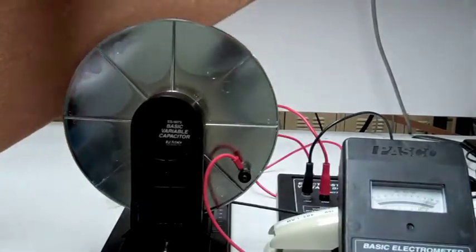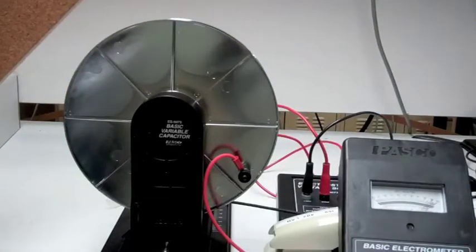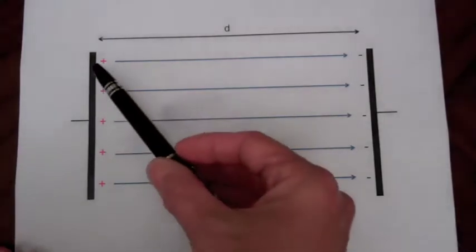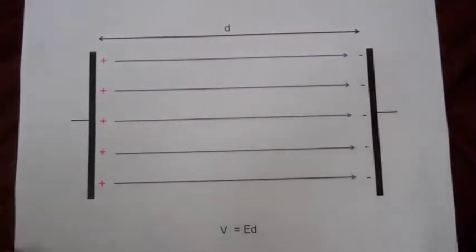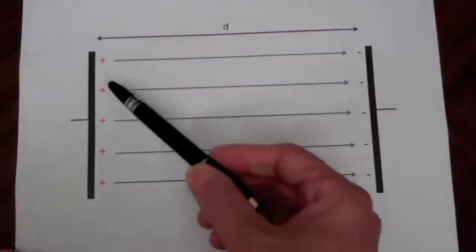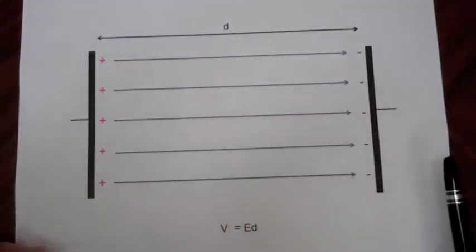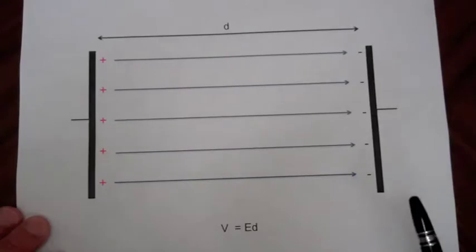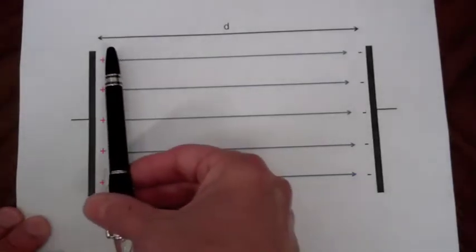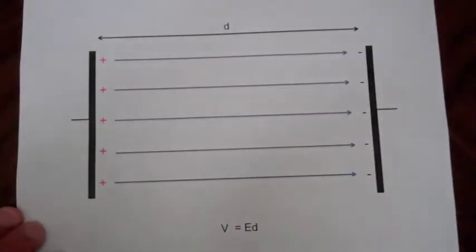Here's the situation we have with a fixed charge on our capacitor. The charge density on the plates is going to determine the electric field, and assuming negligible fringing fields, we have a uniform electric field intensity inside the plates as shown.